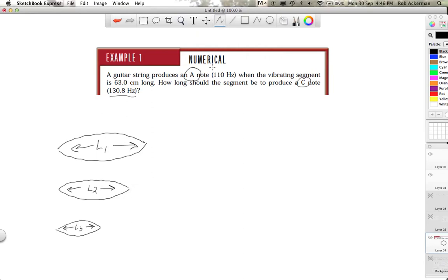And so this question is saying, if the original length of 63 centimeters, this is L1, produces a frequency F1 of 110 hertz, what do we need to do to the length of that string to get a new frequency F2? How long? So what should be L2?